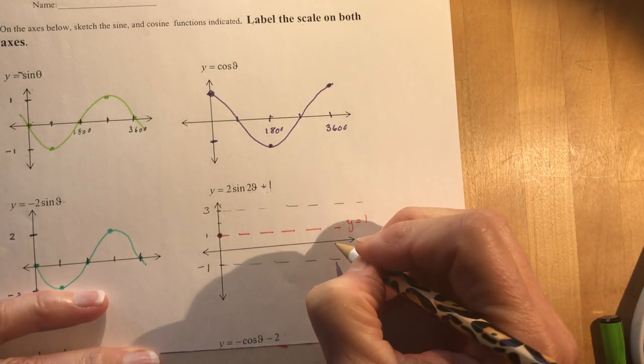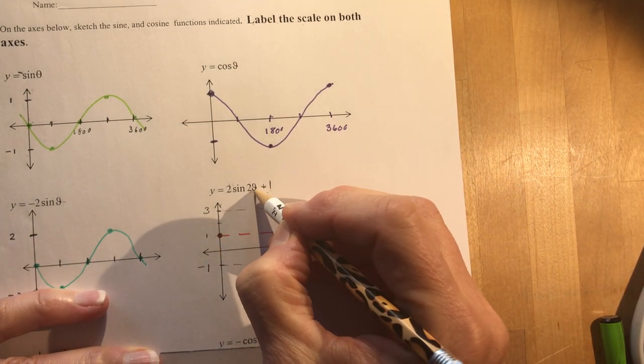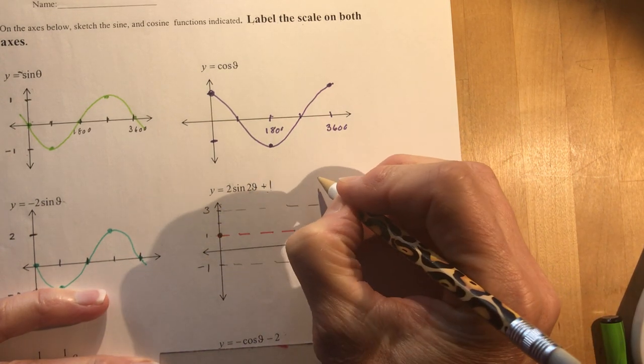I forgot my scale here, I would lose marks for that. Oh, and it's two theta. Oh no, two theta, so what's the period?